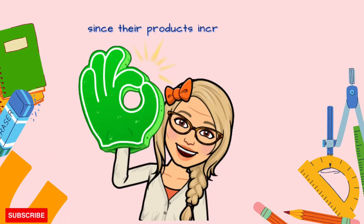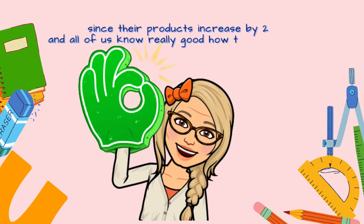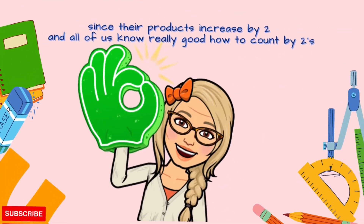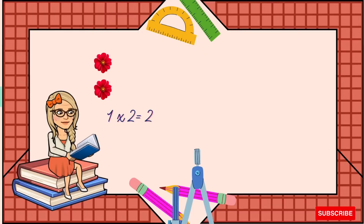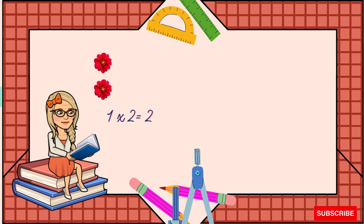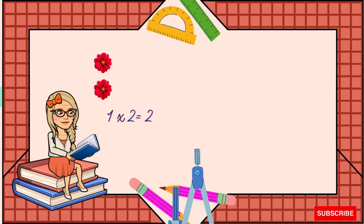Their products increase by two — it is like if we are counting by two, and all of us already know how to count by two. So let's practice it! As you can see at the bottom, I also wrote the multiplication equation so you can see how the amount of flowers increases by two and what multiplication equation goes with it. I want you to focus on both the multiplication equations and the amount of flowers.